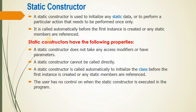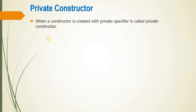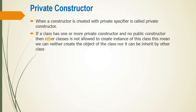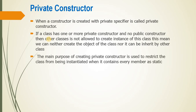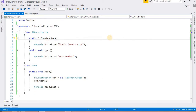This is all about the static constructor. Now I am going to discuss about the private constructor. When a constructor is created with the private access modifier, it is called a private constructor. One more point: if a class has one or more private constructors and no public constructor, then other classes are not allowed to create an instance of this class. We can neither create an object of the class nor can it be inherited by other classes. The main purpose of creating a private constructor is to restrict the class from being instantiated when it contains every member as static.